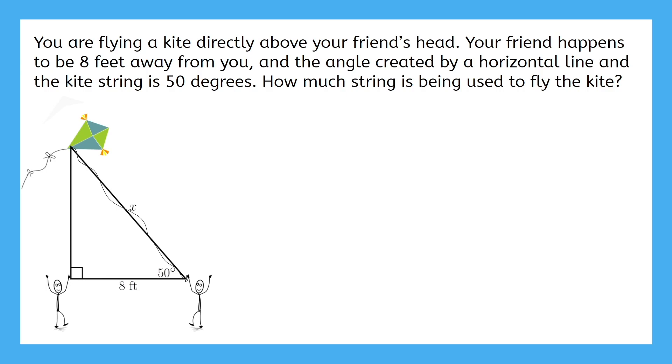Compare your drawing to what you see here. When you were working on your own, did you figure out that 8 is the adjacent side to the 50 degree angle? Did you know X was the hypotenuse? Adjacent and hypotenuse? Ah, this time we need cosine.